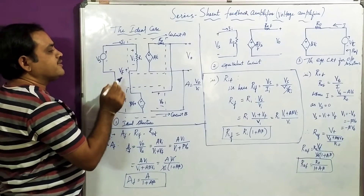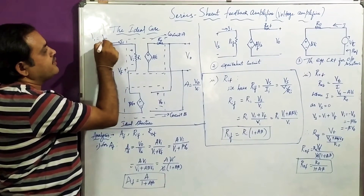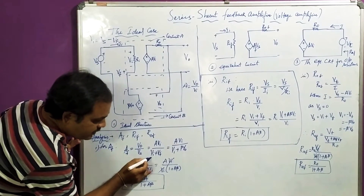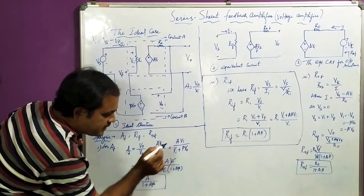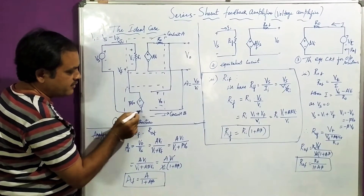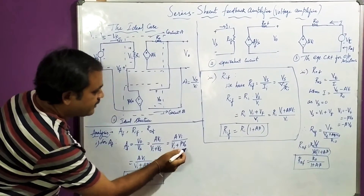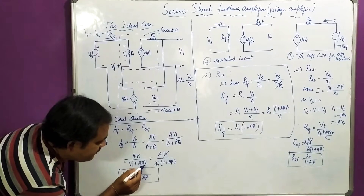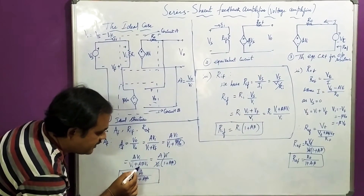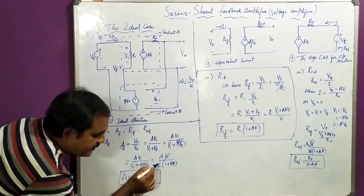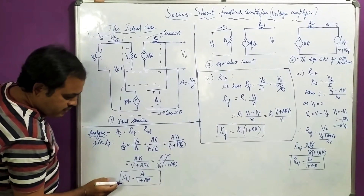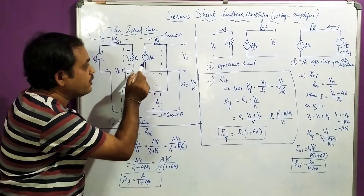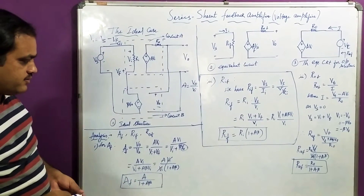Now, VI is nothing but VS minus Vf, which means VS equals VI plus Vf, as we derived in the general feedback structure. So we have A·VI divided by (VI + Vf). The feedback signal Vf is obtained from the dependent source: Vf = beta·V0 = beta·A·VI. Substituting and taking VI as a common factor, VI cancels out. The expression for closed-loop gain obtained is: AF = A / (1 + A·beta), where A is the open-loop gain and (1 + Aβ) is called the amount of feedback gain. This confirms negative feedback.